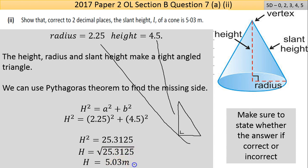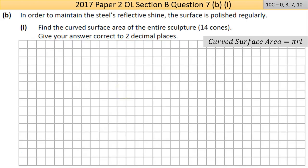Part B here: in order to maintain the steel's reflective shine, the surface is polished regularly. Part 1 says find the curved surface area of the entire sculpture of 14 cones. Remember, the cones are joined at the base, so we don't need to find the curved surface area of the base.